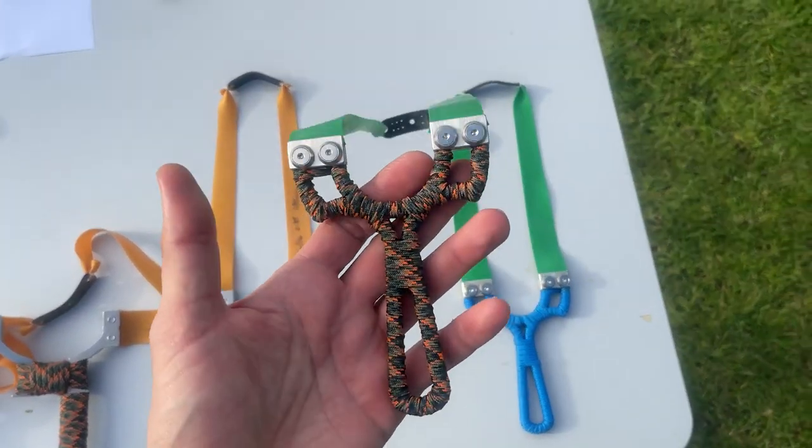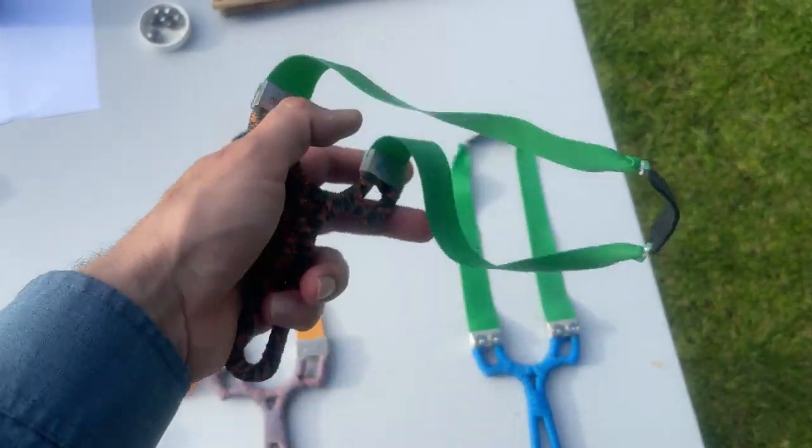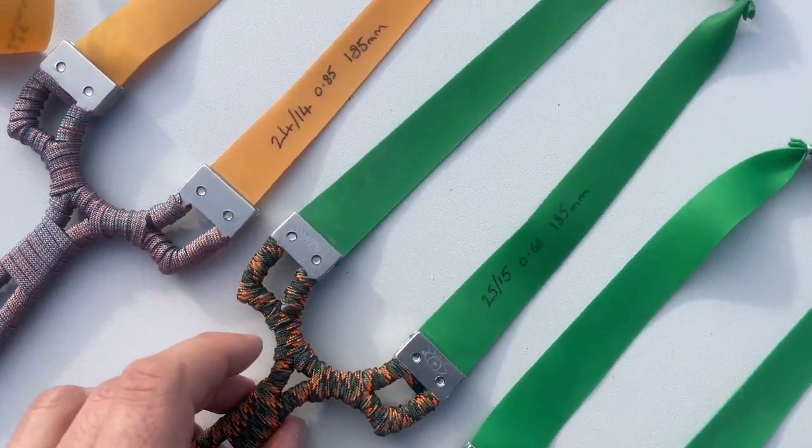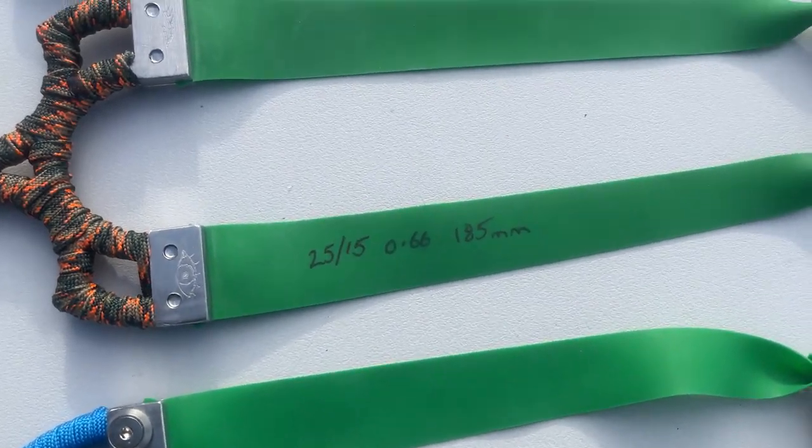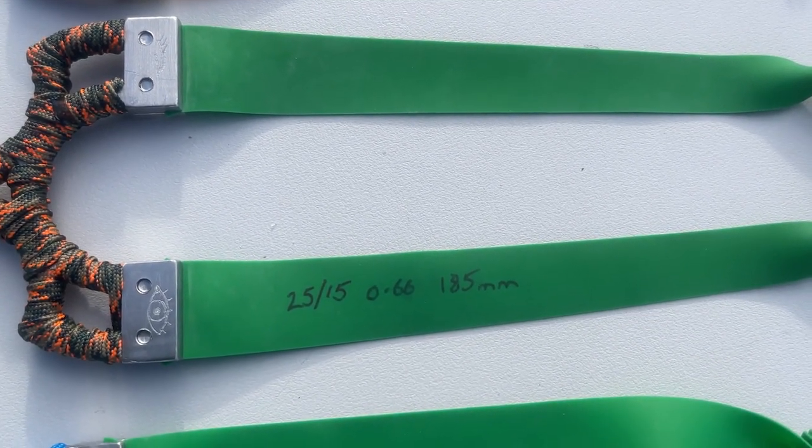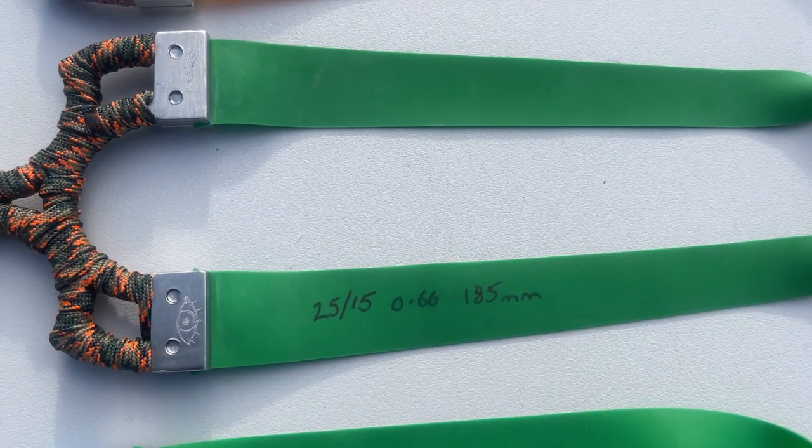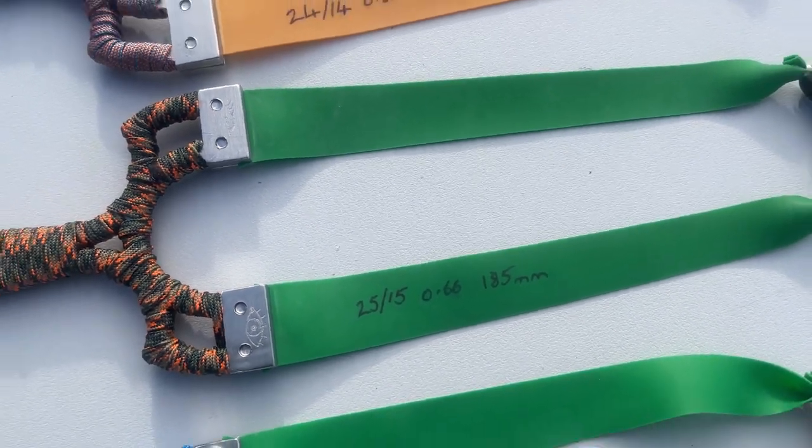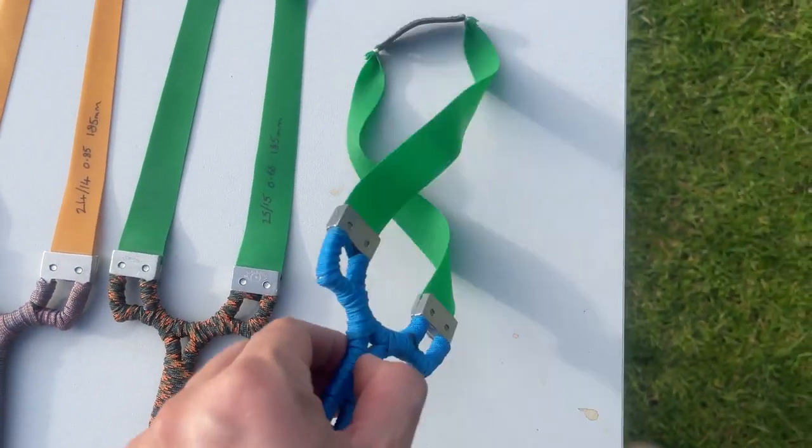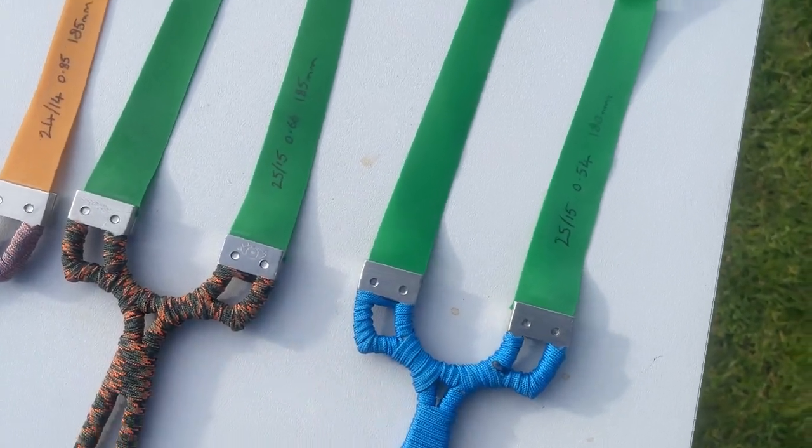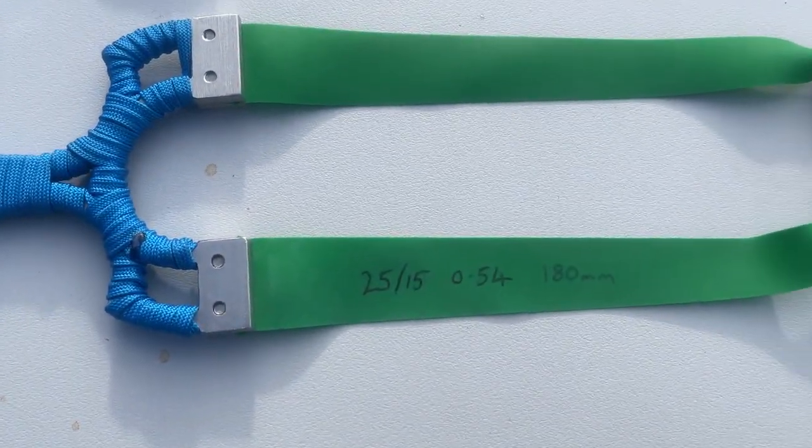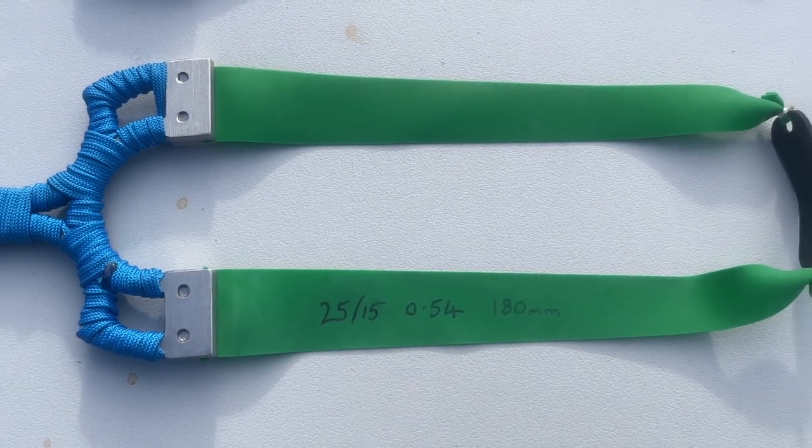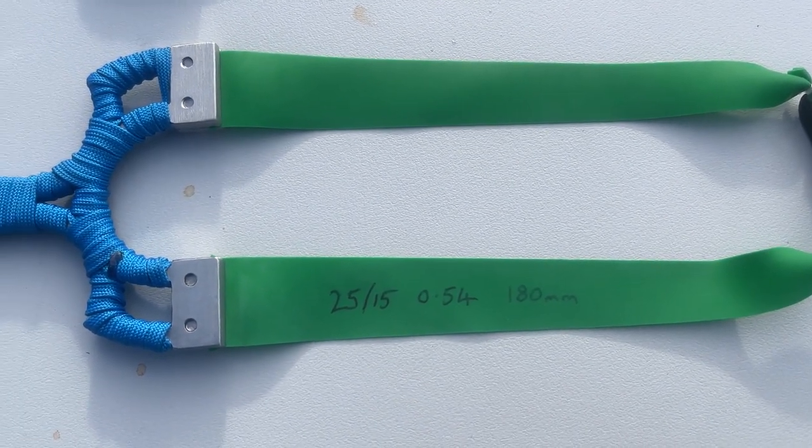Then we have my personal favorites, we've got the Ninja and I'm shooting it with 25 to 15, 0.66 GZK green with 185 millimeter active band length. And then finally we have another Ninja with 25 to 15, this time it's 0.54 millimeter GZK green with 180 millimeter active band length.